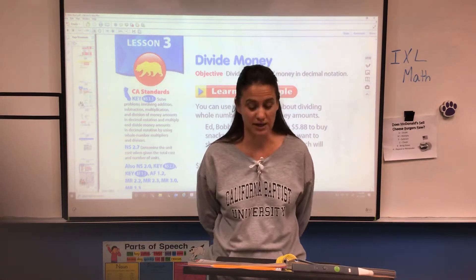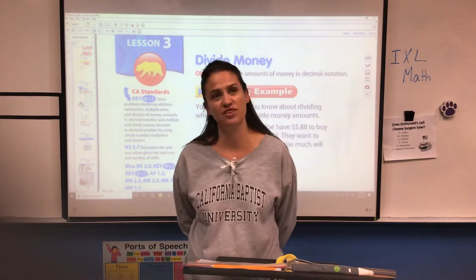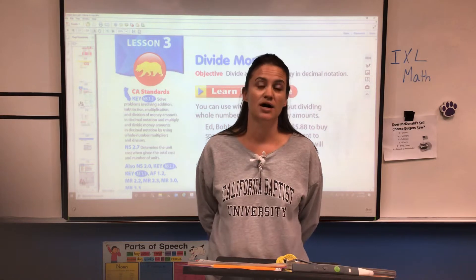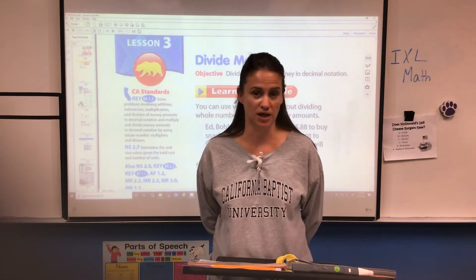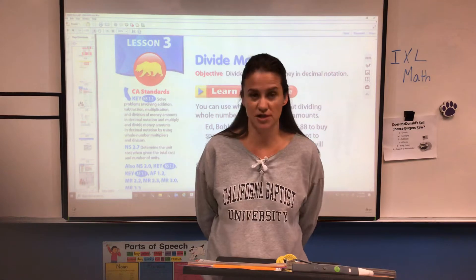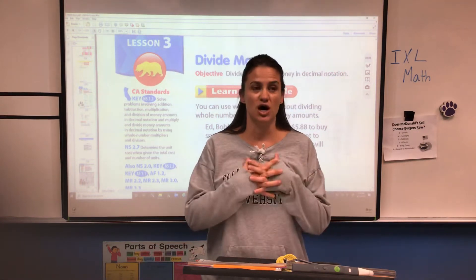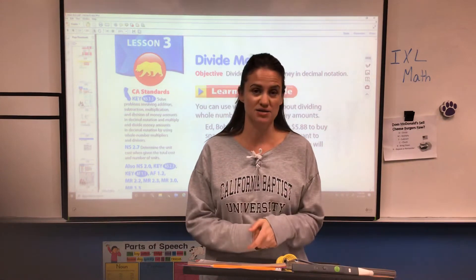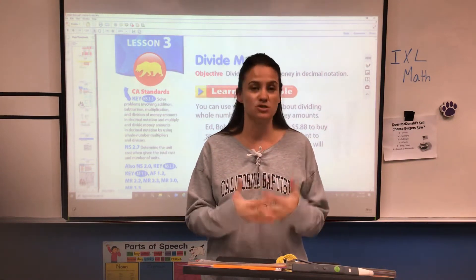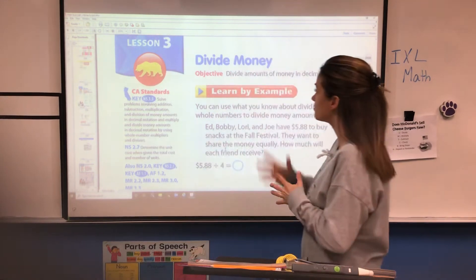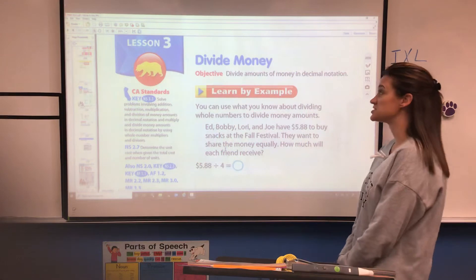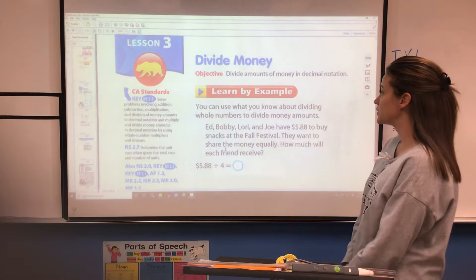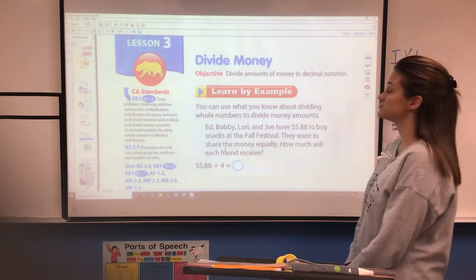Today we're going to be dividing with money. You got to think back to when we did multiplication and started multiplying bigger digits and then with money. The only difference was the decimal point. It's the same thing with division. The steps you're going to take are exactly the same, you're just adding a decimal point. The objective is to divide amounts of money in decimal notation. You can use what you know about dividing whole numbers to divide money amounts.